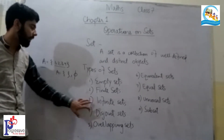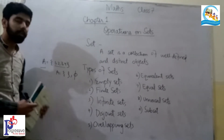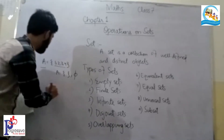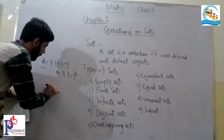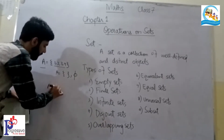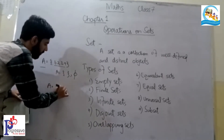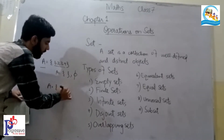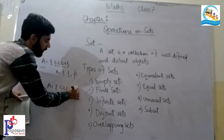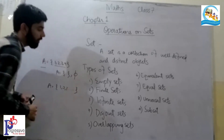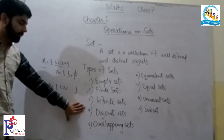Infinite set: a set which has infinite numbers of values. For example, {1, 2, 3, ...} up to so on — this is an infinite set.